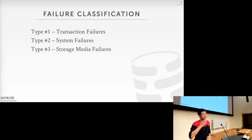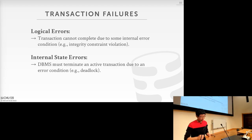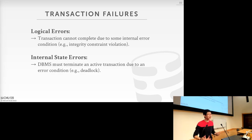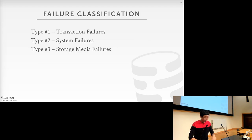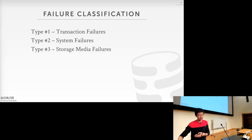Following that, there are three types of failures the database system may encounter. The first would be transaction failure, the second would be system failure, and the third would be storage media failure. A heads-up: the types of failures that logging and recovery can deal with are actually the first two. The third type — storage media failure — is not something the database system deals with by itself; it would require some external help or redundancy created by humans.